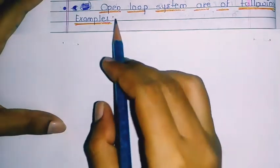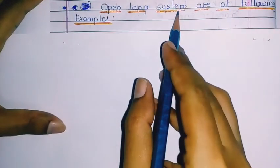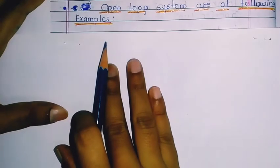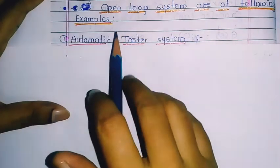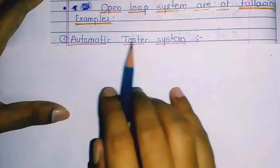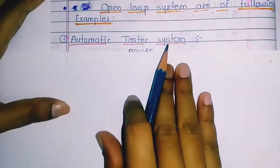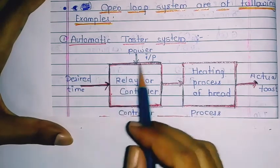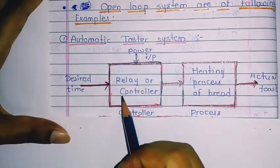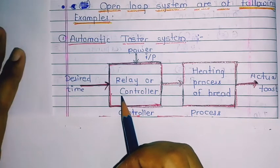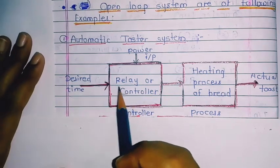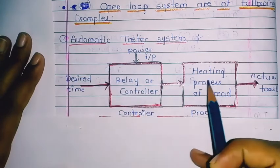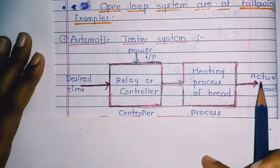Hello students. Today we see the open loop system examples. The first example is the automatic toaster system. The block diagram of the automatic toaster system consists of desired time, relay or a controller, and heating process of bread.